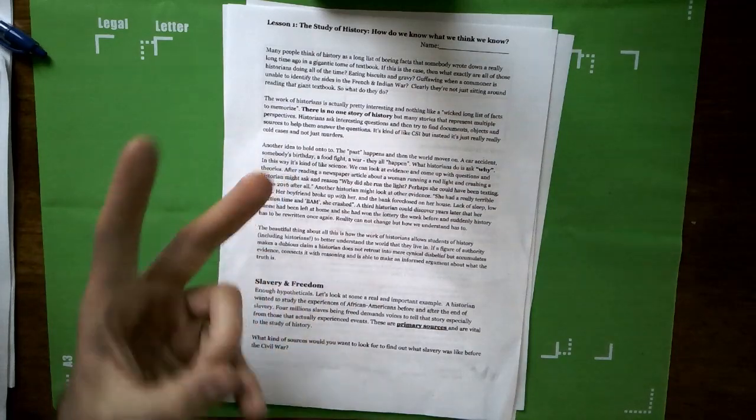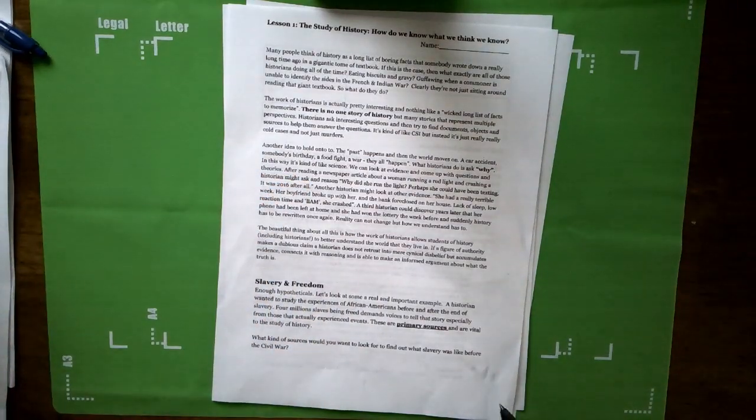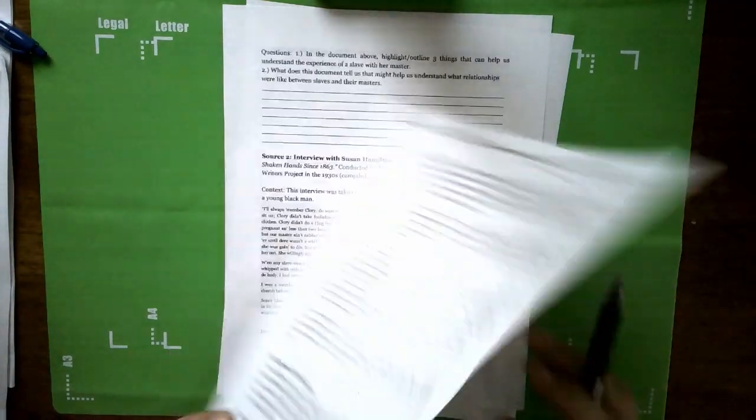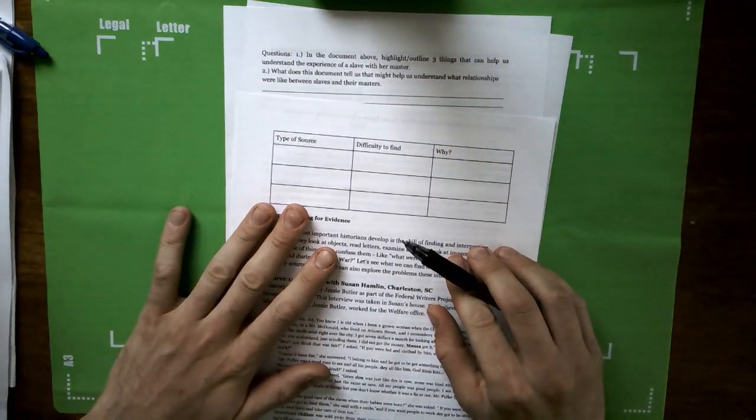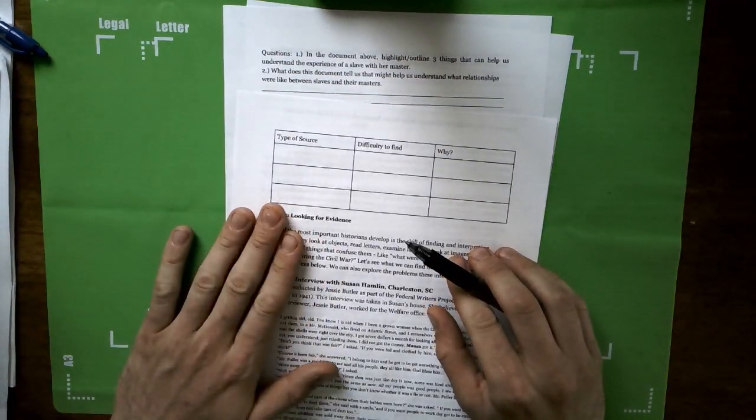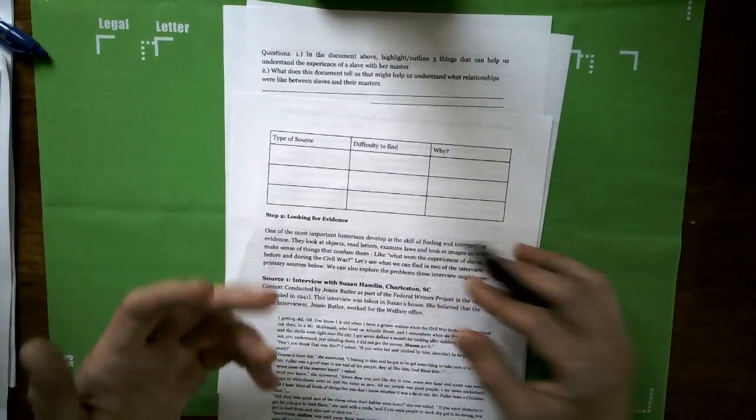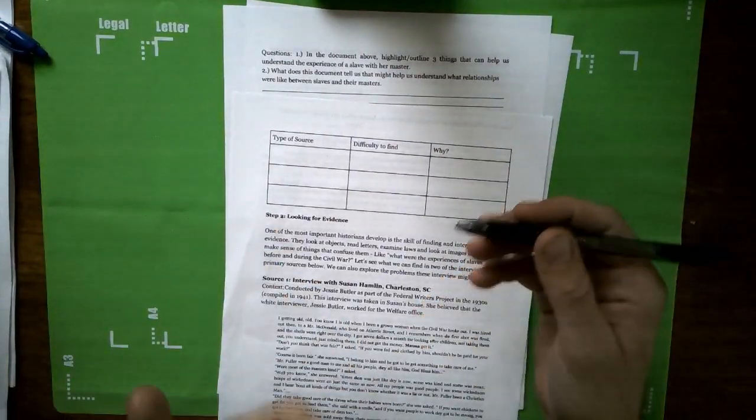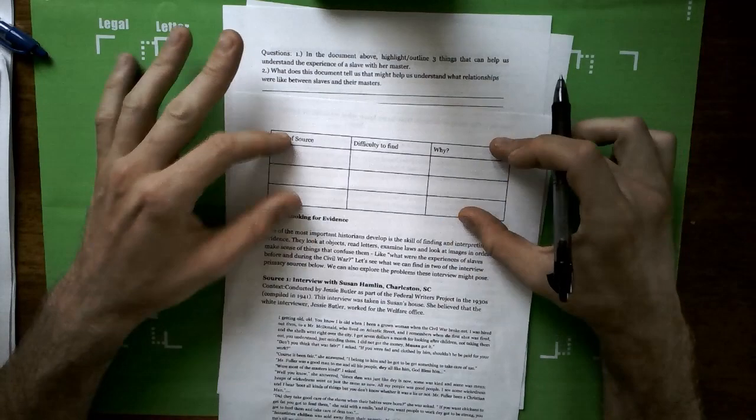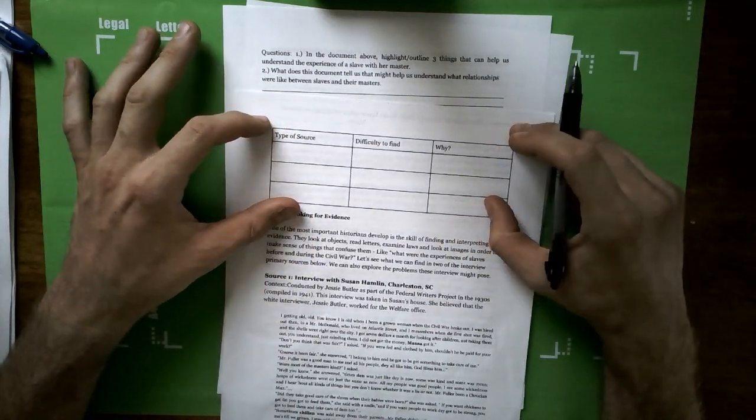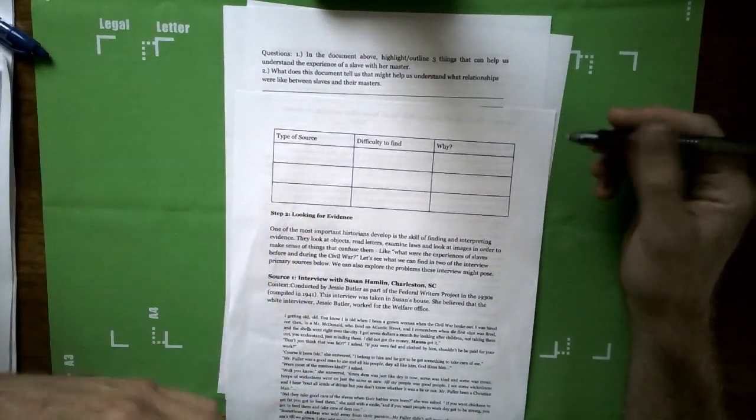You're going to be looking at two primary sources, and basically before you do that, you're going to have to try to figure out if you were a working historian trying to answer the question of what slavery was like before the Civil War, what kind of sources would you go and look for? So I have this grid here. This is assignment number three, and I'm just going to give you an example just to kind of get you guys started.